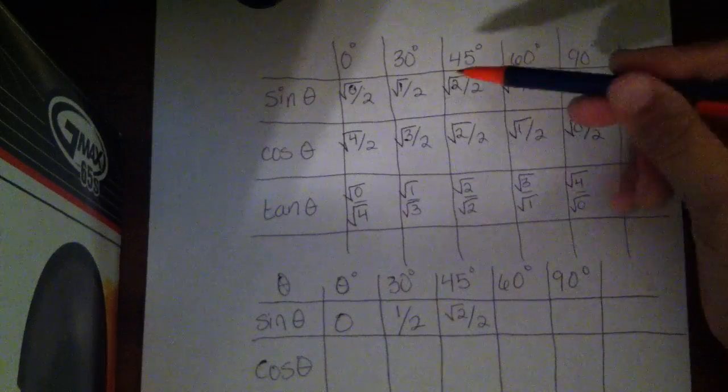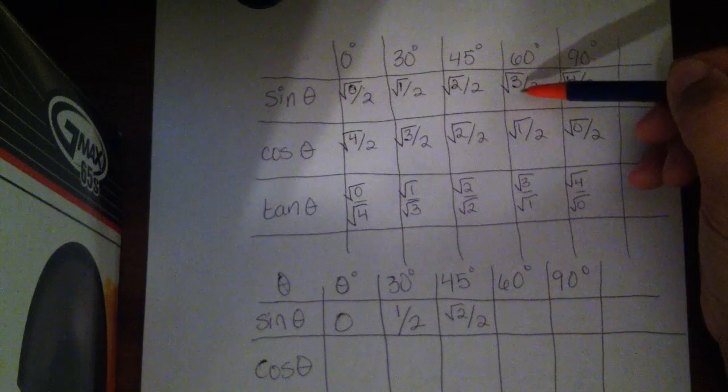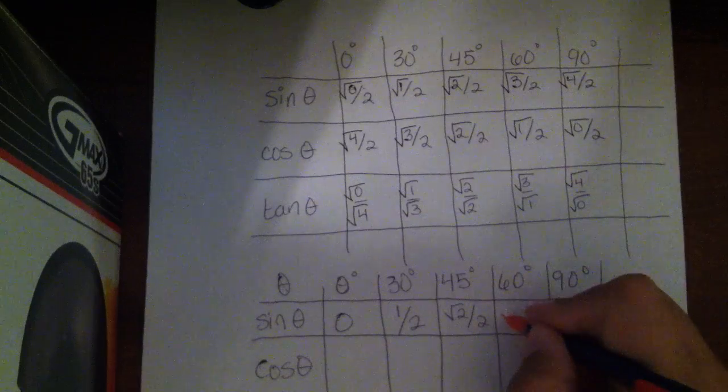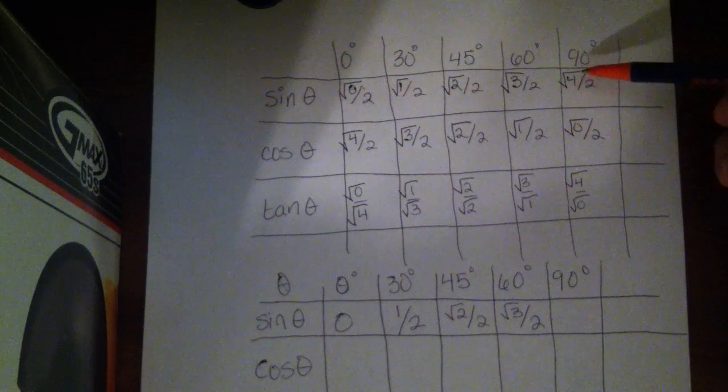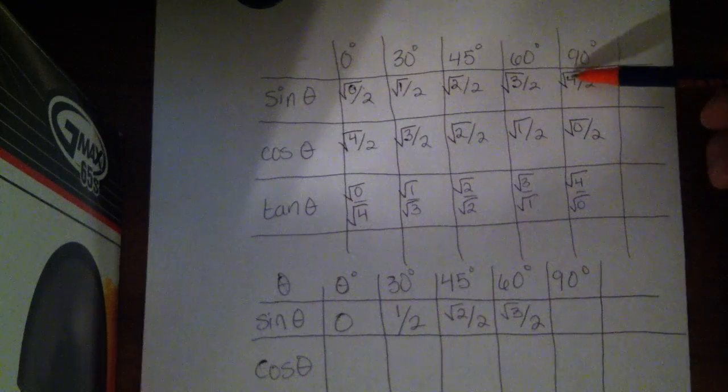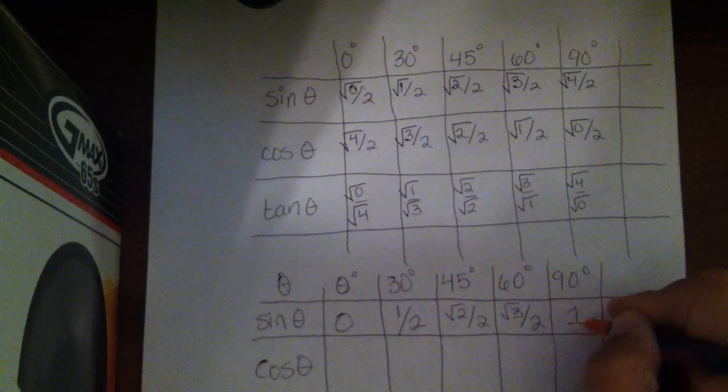And the same exact thing for the sine of 60, 3 is not a perfect square, there's no way to simplify that, so I'm just going to leave it as the square root of 3 over 2. But sine of 90 will simplify, because the square root of 4 is 2, and 2 divided by 2 is 1, so the sine of 90 is 1.